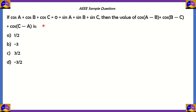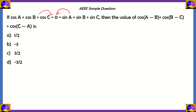Let's start off with our first question. If cosA plus cosB plus cosC equals 0, which is also equal to sinA plus sinB plus sinC, then find the value of cos(A-B) plus cos(B-C) plus cos(C-A). The options are 1/2, -3, 3/2, or -3/2. We know that the sum of the cosine terms is 0 and the sum of the sine terms is 0, and we'll have to use them while solving for the given equation.